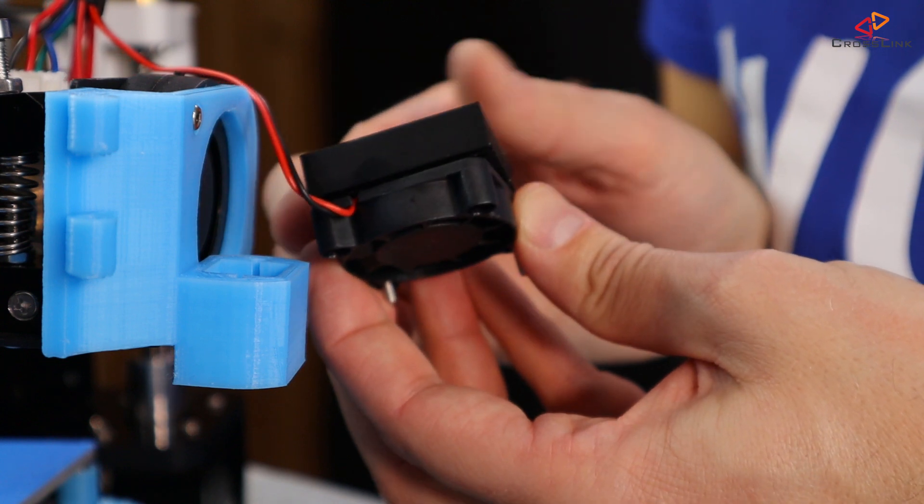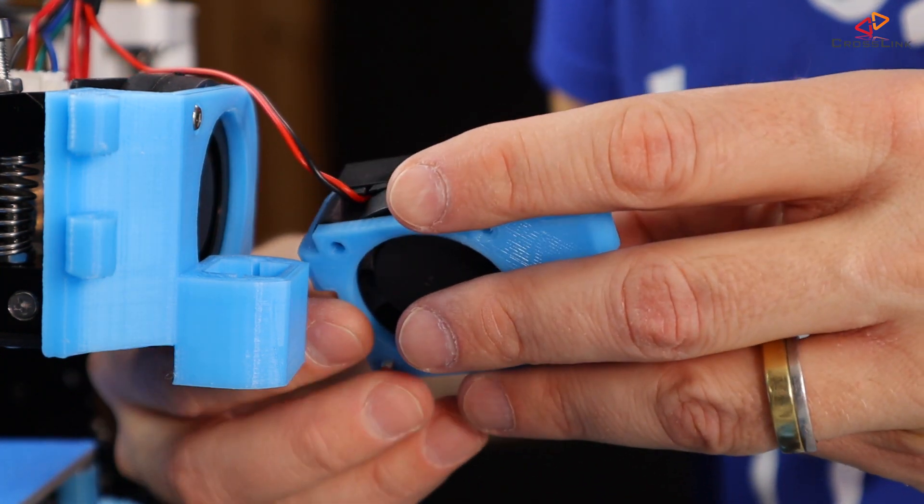Next we mount the moving hinge part to the extruder cooling fan and the cooling block.